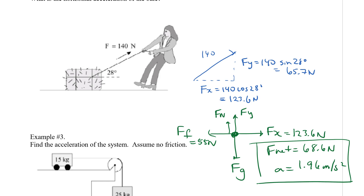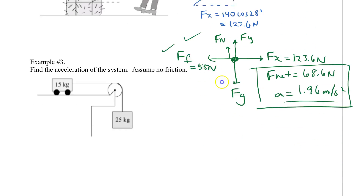To solve the student's version quickly: find the x and y components of the angled force, redraw the force diagram, note the vertical forces balance (so no need to solve for normal force separately), use the given friction force to find F-net, then divide by mass to get acceleration.